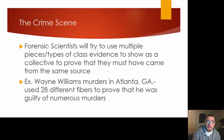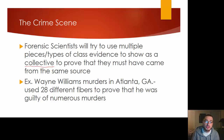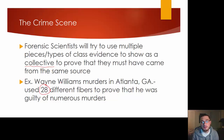They're going to try to use multiple pieces or types of evidence to show a collective — go back to the product rule. Take the example of the Wayne Williams murders in Atlanta, Georgia: this guy went around killing people and they used different fibers to prove he was guilty of numerous murders. If they only had one fiber from him and from the scene they couldn't have done anything, but they had 28 different fibers that matched, so ultimately they said it had to be Wayne Williams and connected him to a number of murders.